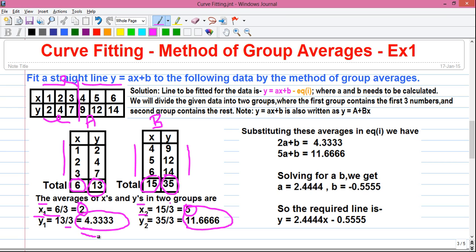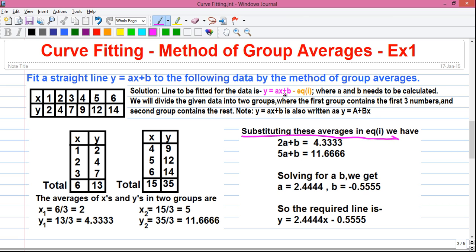I did not round off the values 4.33 and 11.666. You can do if you want. So by substituting these averages in equation number 1, that is this equation, then we have 2a plus b equals 4.3333. That is our equation number 2. And 5a plus b equals 11.6666. That is our equation number 3.